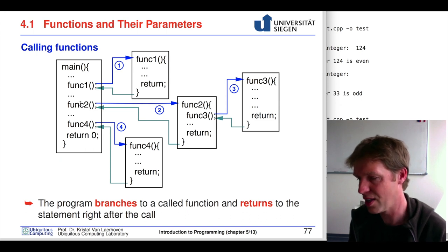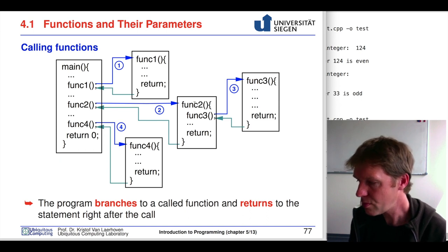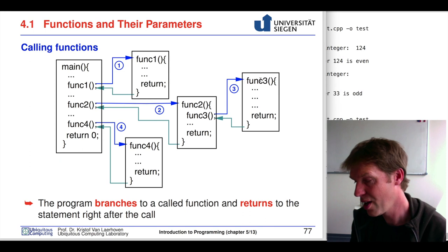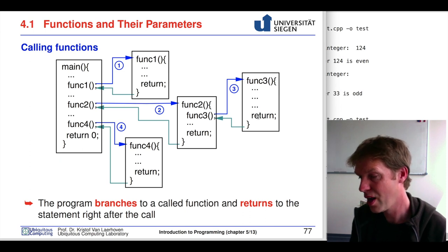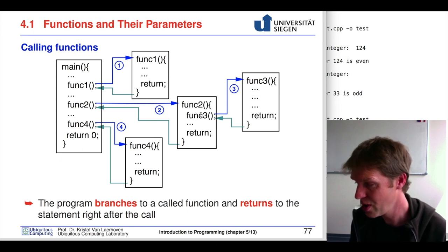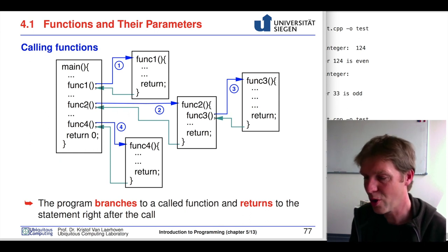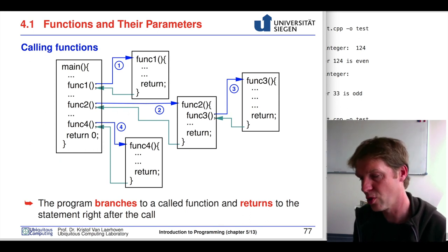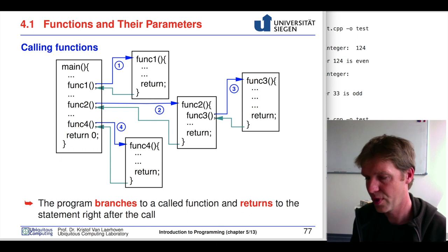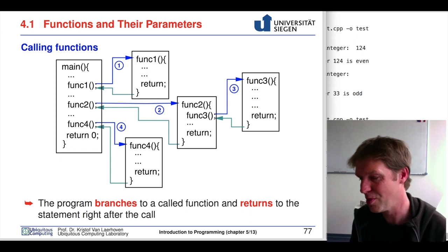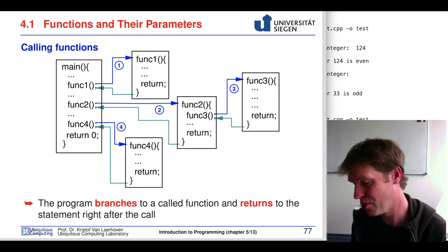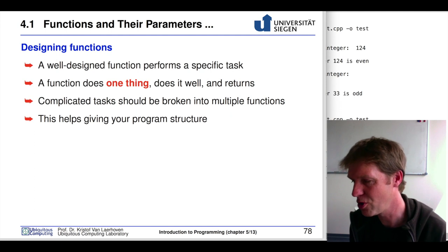In this case, function 2 is branched into, and inside function 2 we call function 3, which is then branched into. Once function 3 returns, it goes back to function 2. Once function 2 returns, we go back to the main function. This return statement is extremely important for all of the functions that we're going to use.